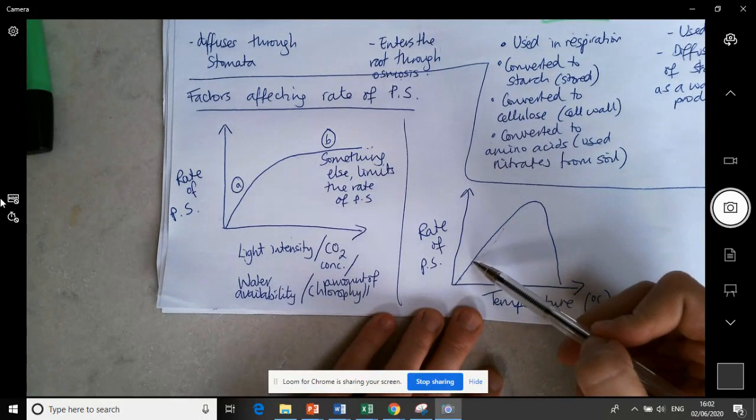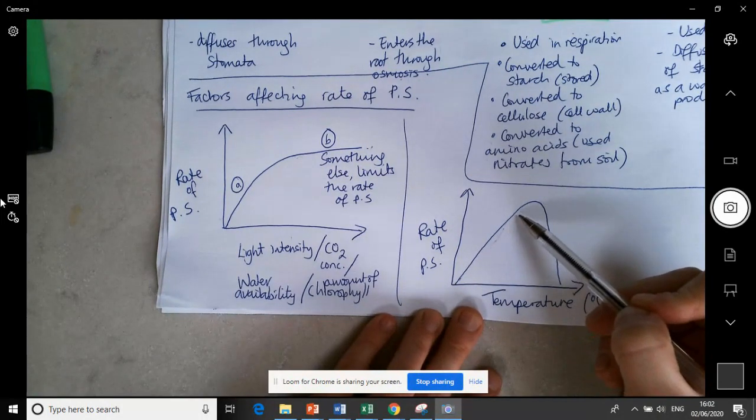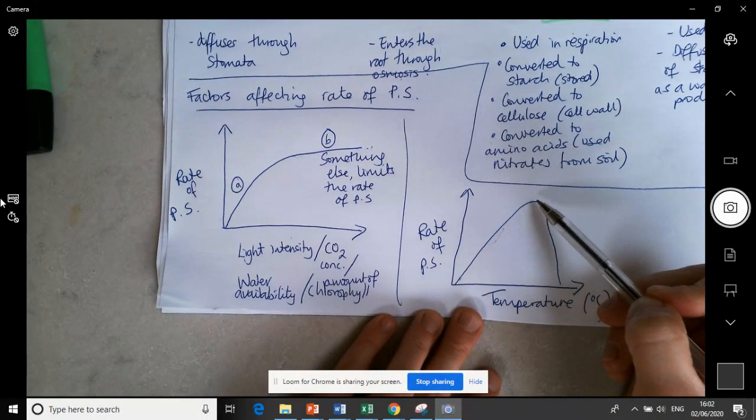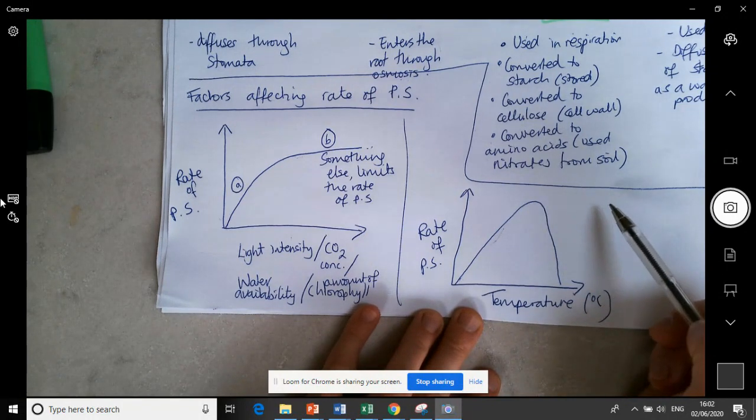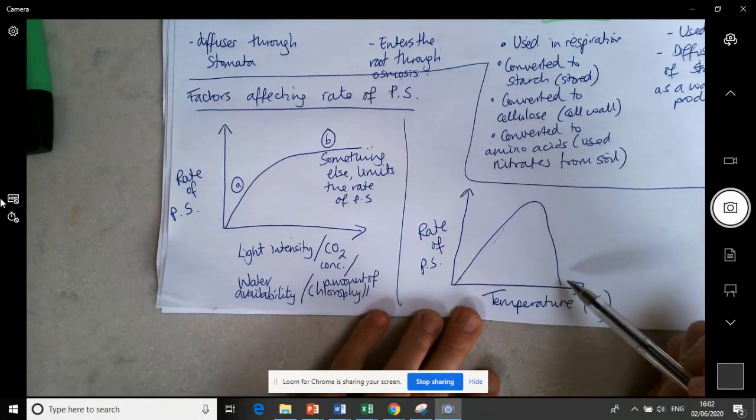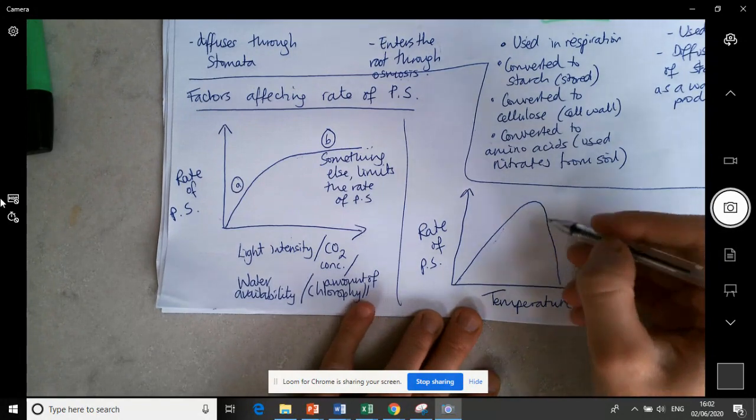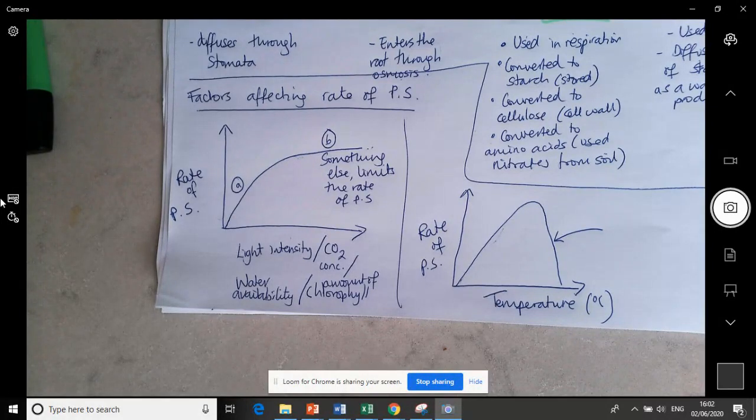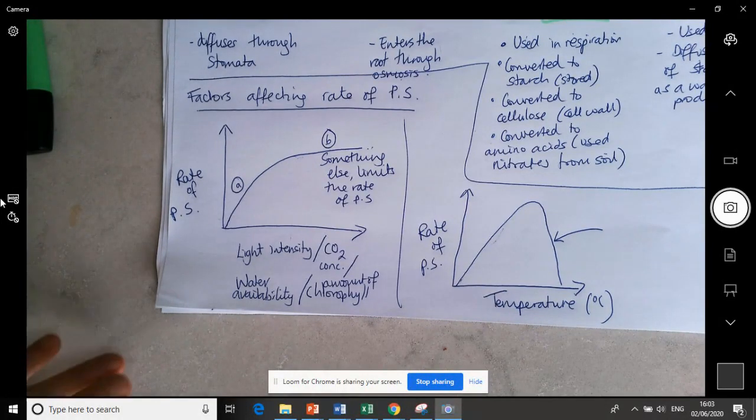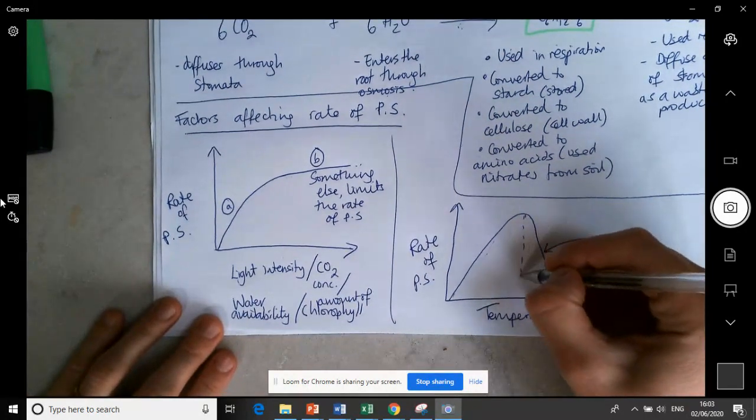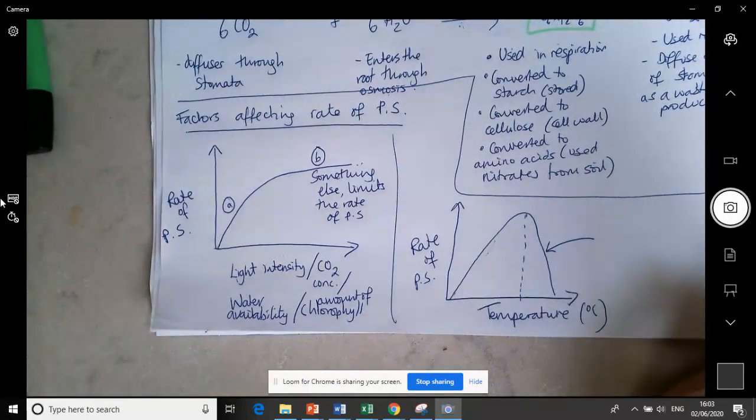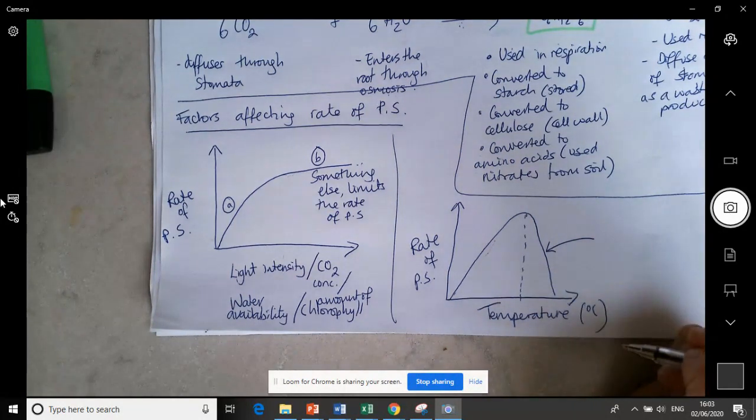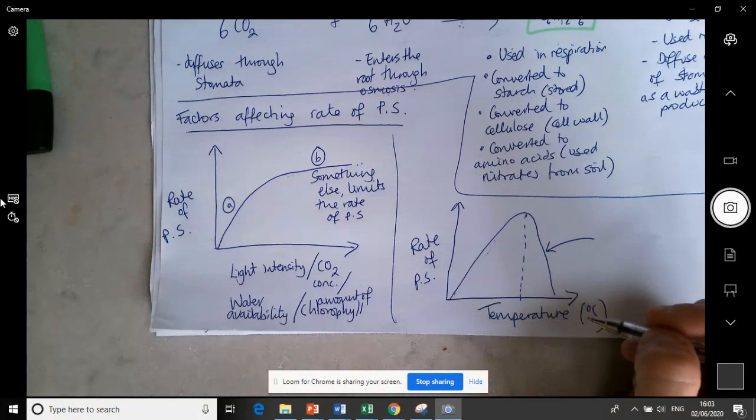Here as we increase the temperature the rate of photosynthesis increases. But at a certain point it doesn't level off, it suddenly decreases again. The reason why it decreases is because photosynthesis is a reaction and therefore enzymes control that reaction. Enzymes make it speed up. And after a certain temperature the enzymes denature because the temperature is too high, and therefore the reaction can no longer take place.